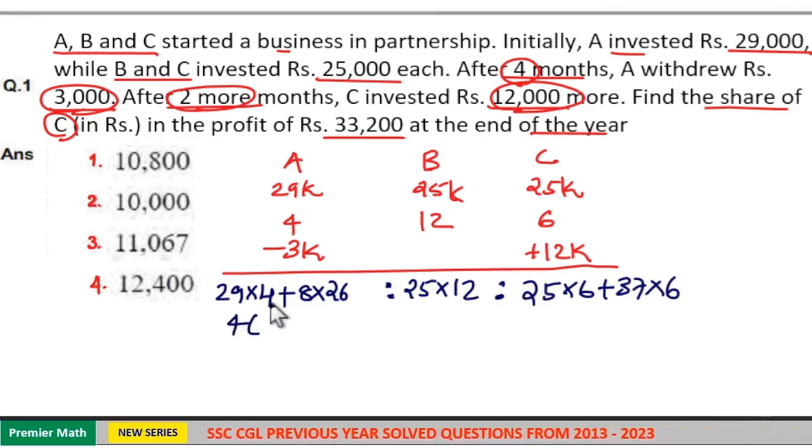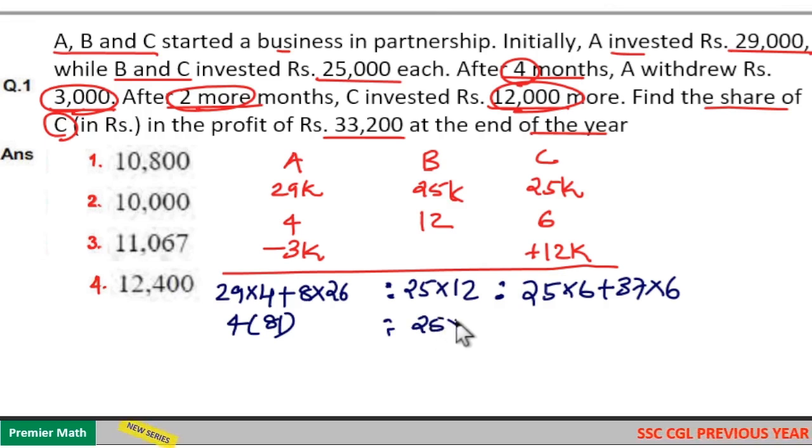Now ratio is equal to if I take 4 outside this will become 29 plus 52, 52 plus 29 is 81. Now here 25 into 12 and here if I take 6 outside 6 into 25 plus 37, 25 plus 25 is 50, 50 plus 12 is 62.